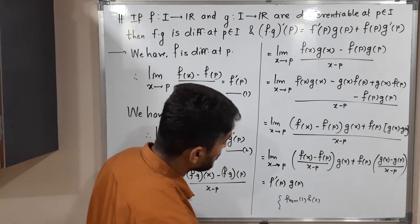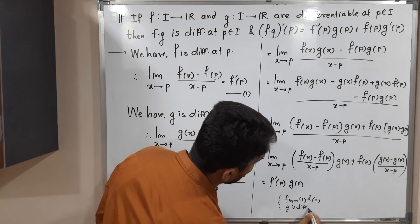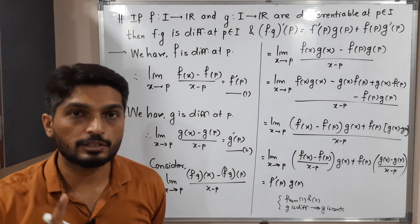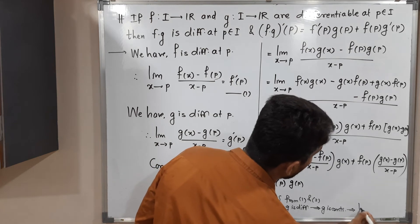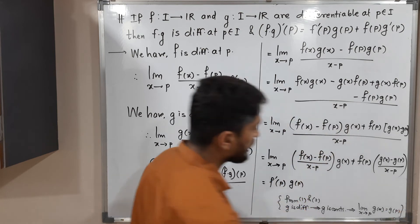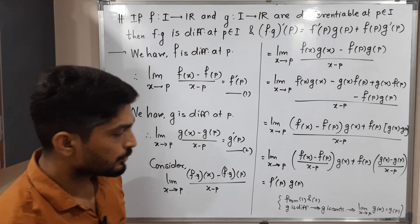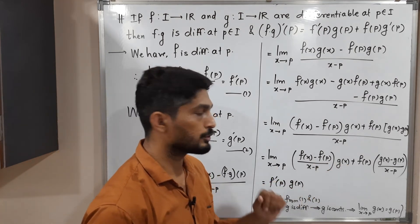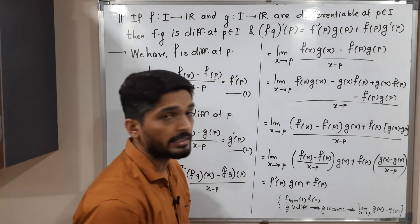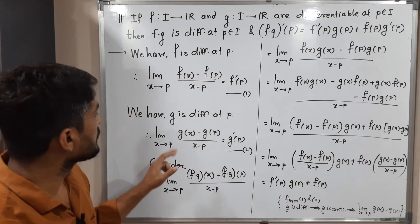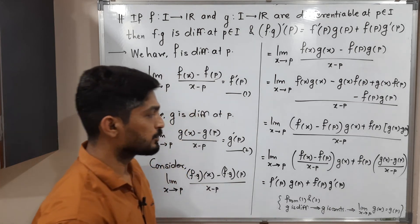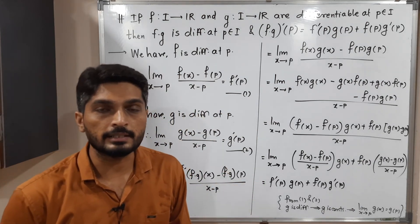If we apply the limit to g(x), it becomes g(p). The reason is: g is differentiable implies g is continuous — since every differentiable function is continuous. And if g is continuous at p, then by the definition of continuity, limit x tends to p of g(x) equals g(p). So we get f dash of p times g(p), plus f(p) times g dash of p, from equation number two.